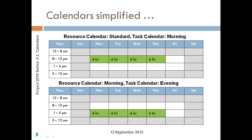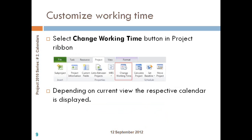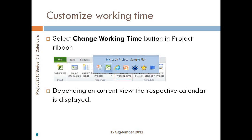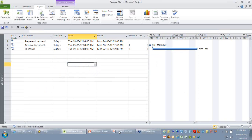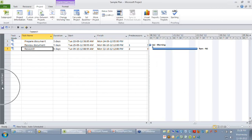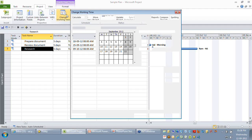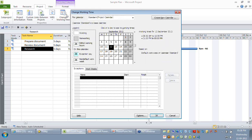When you want to customize your working time, I recommend going to the Change Working Time option of your Project ribbon. Depending on what your current view is, different calendars will be displayed. For example, if my current view is my Gantt chart and I click on Change Working Time, you would be able to find only your project calendar or base calendars listed by default.